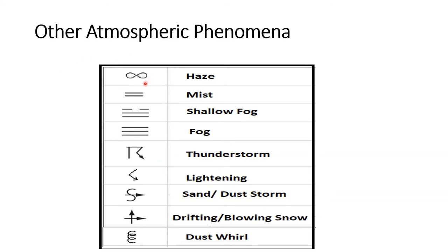Other atmospheric phenomena of weather map represents haze, mist, shallow fog, fog, thunder storm, lightning, sand or dust storm, drifting or blowing snow, dust whirl, etc. These are situated beside the station so that their characteristics are represented by these symbols.